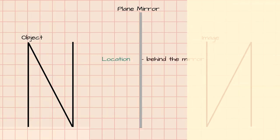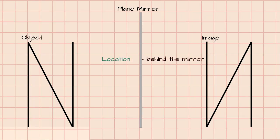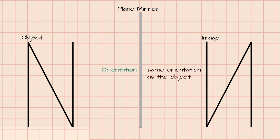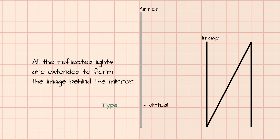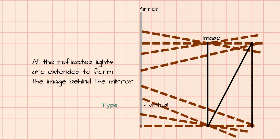The image is located behind the mirror, or at the back of the mirror. The orientation is upright, or the same orientation as the object. The size is the same size as the object. And it is virtual, because all the reflected rays are extended to form the image behind the mirror.